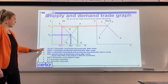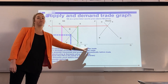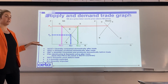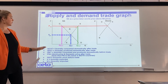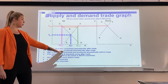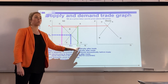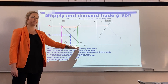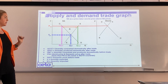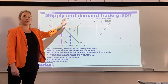Don't worry about the different labels on this graph — they mean the same thing, we've just learned them differently. For example, 'quantity consumed domestically after trade' is the same as our 'quantity demanded in New Zealand.' Always just read the curves and the country.